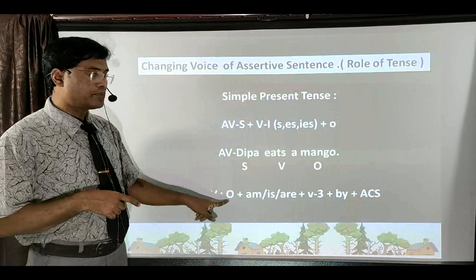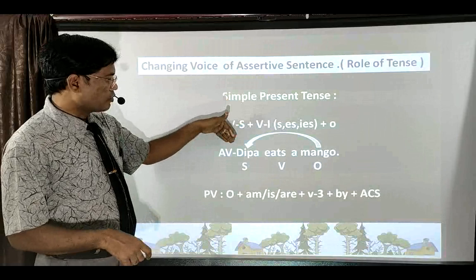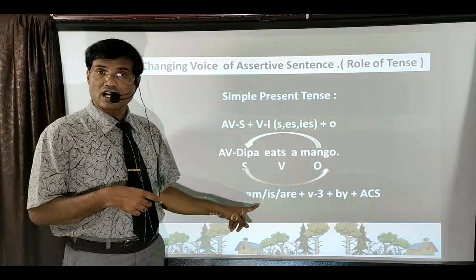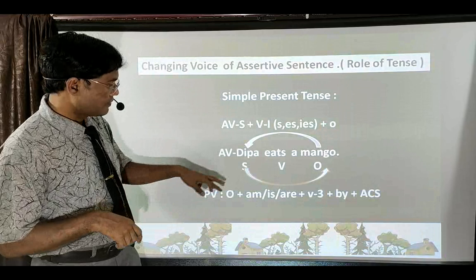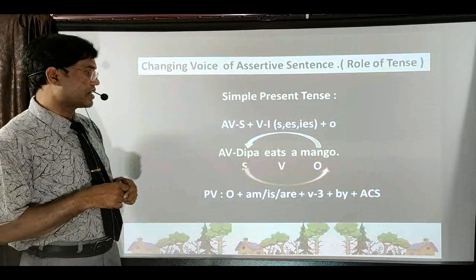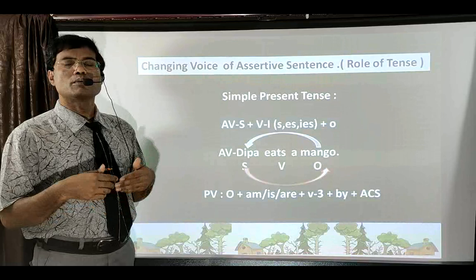When making passive voice, the first process is to replace the object in place of subject and subject in place of object — this replacement is important in voice change. After that, since we are talking about present tense, from 'is/am/are' choose the appropriate to-be form of verb, then write the third form of verb (past participle), followed by 'by' and the accusative/objective case of the subject.